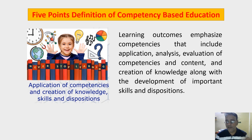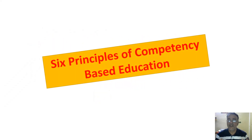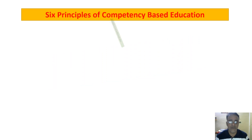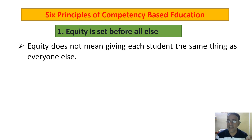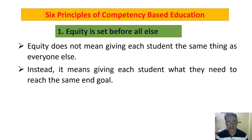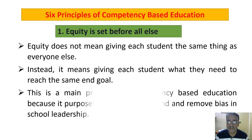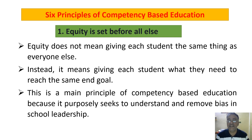Now we are going to see the six principles of competency-based education. The first and very important principle is: equity is set before all else. Equity does not mean giving each student the same thing as everyone else; instead, it means giving each student what they actually need to reach the same goal. This is the main principle of CBE because it purposefully seeks to understand and remove bias in school leadership.